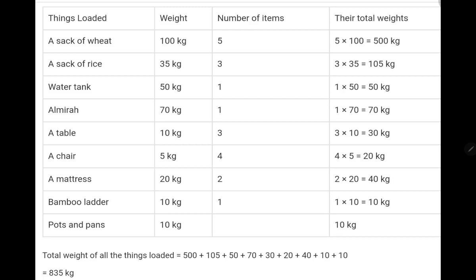We have a total weight. Let's see. First of all, a table should be made with things loaded, weight, and number of items. A sack of wheat is 100 kg, 5 sacks, so 5 times 100 equals 500 kg. Rice, 1 rice is 35 kg, 3 sacks will be 105 kg. Water tank 50 kg, 1 water tank is 50 kg.